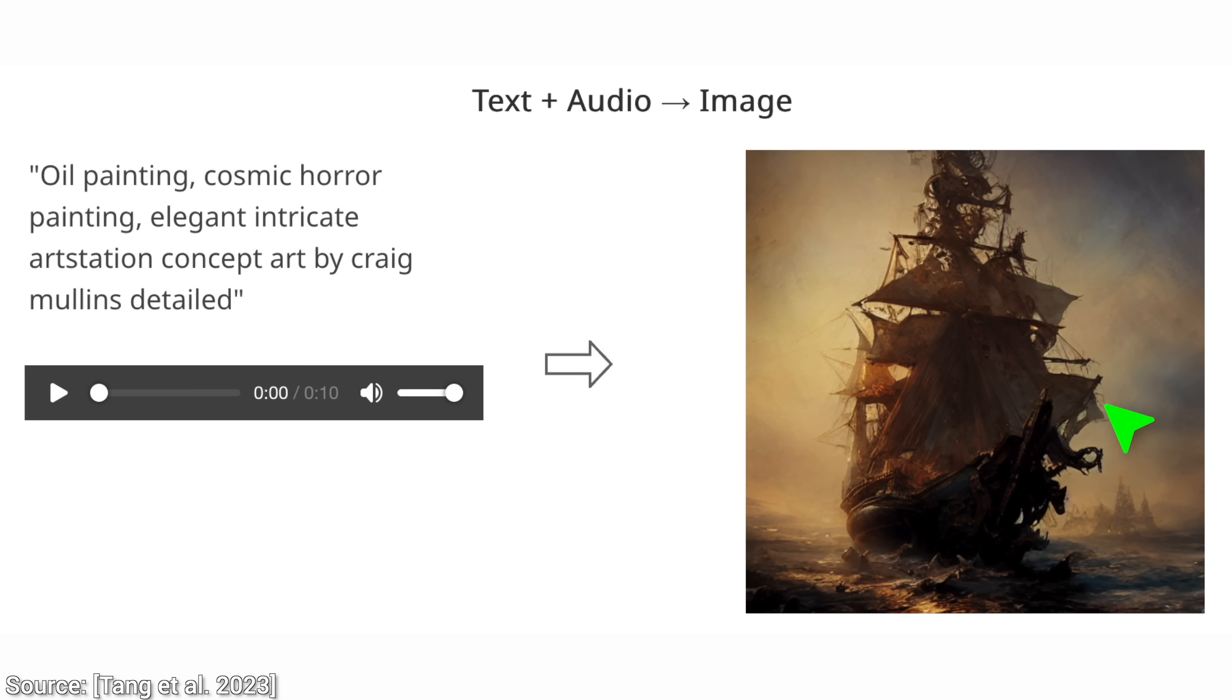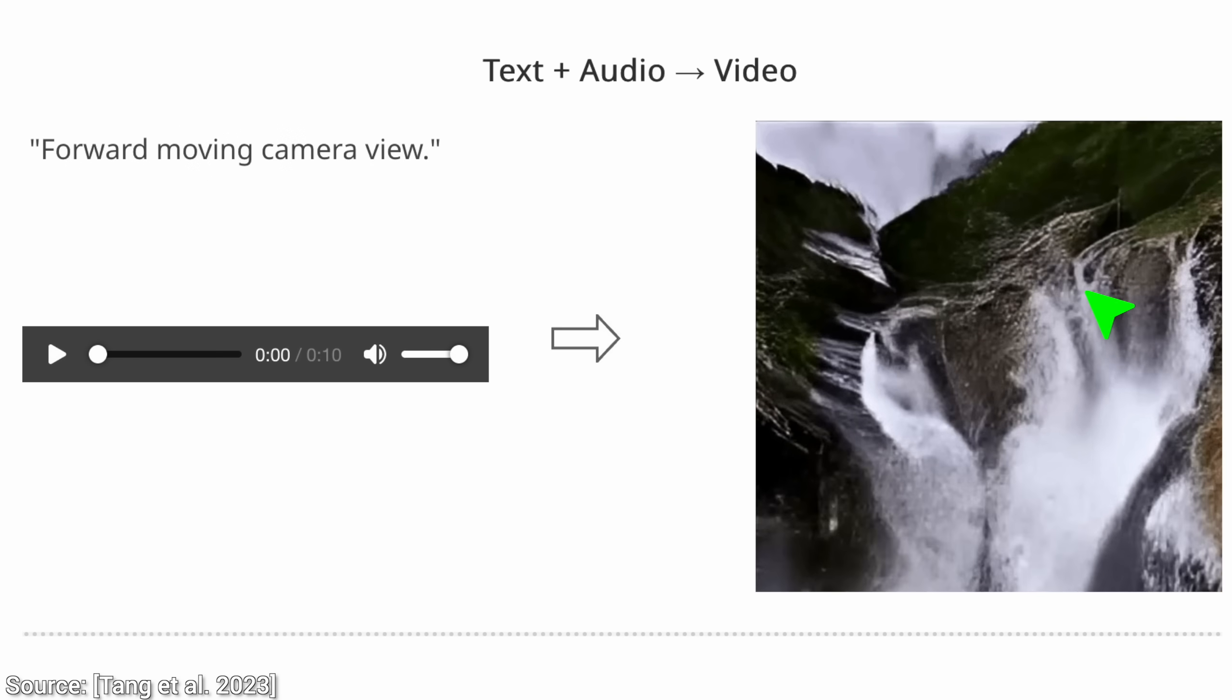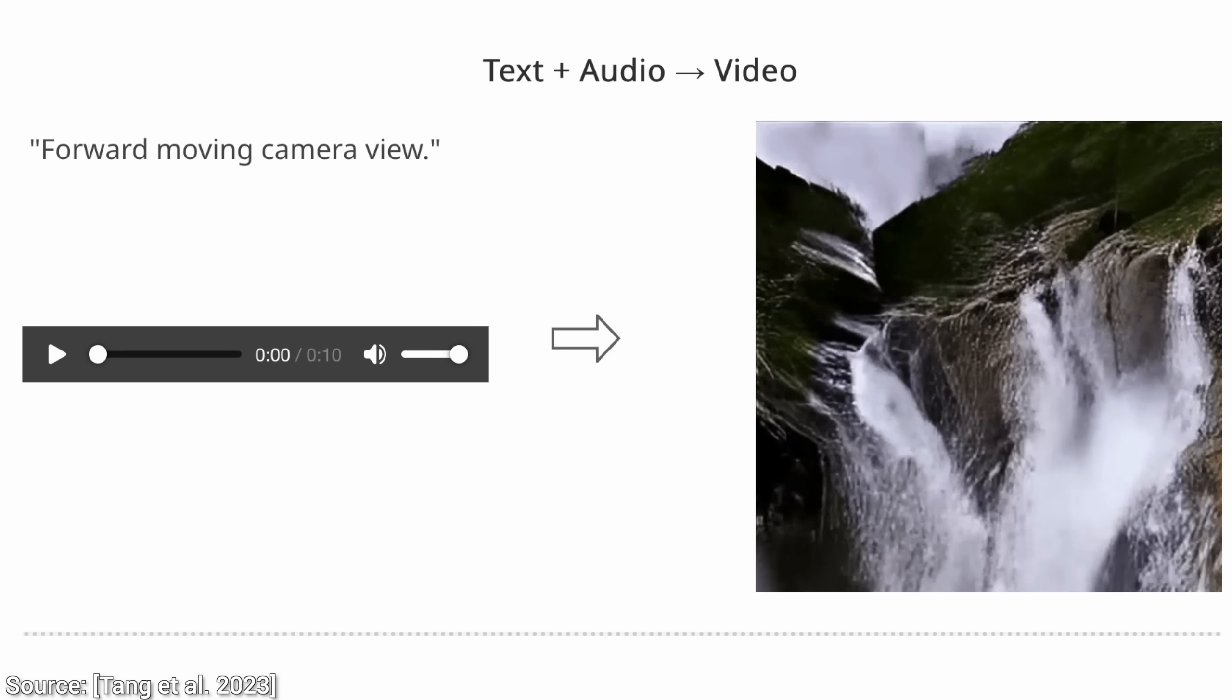But wait, it gets even better. Three, we can even enter a text prompt, plus a piece of audio, and out comes not just an image, but oh my, even a piece of video. As requested, the camera indeed goes forward ever so slightly. Good job, little AI.